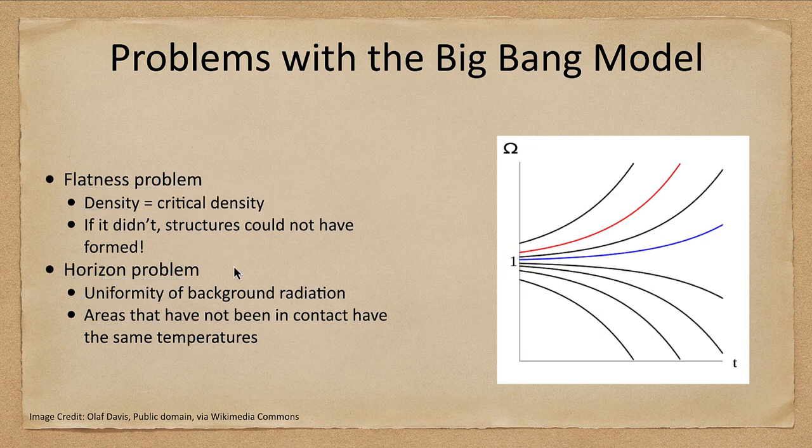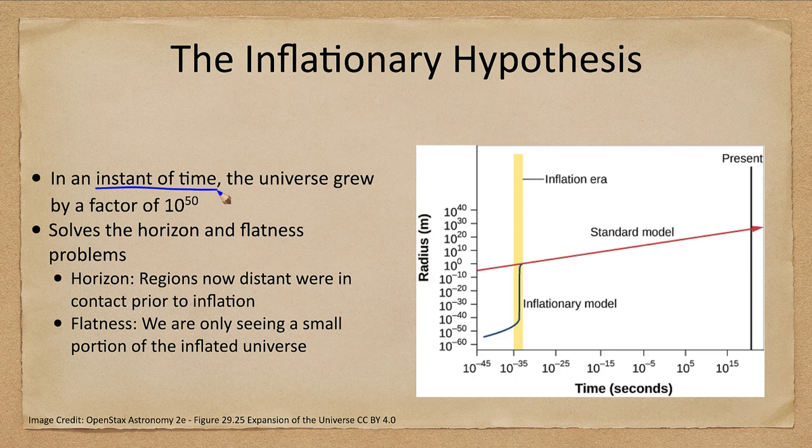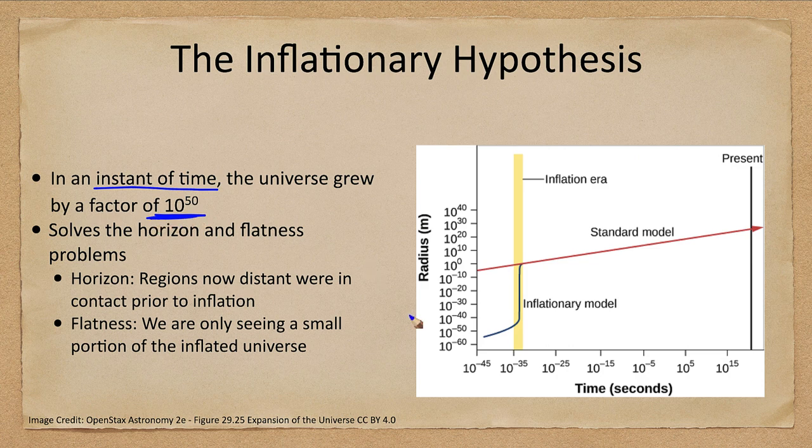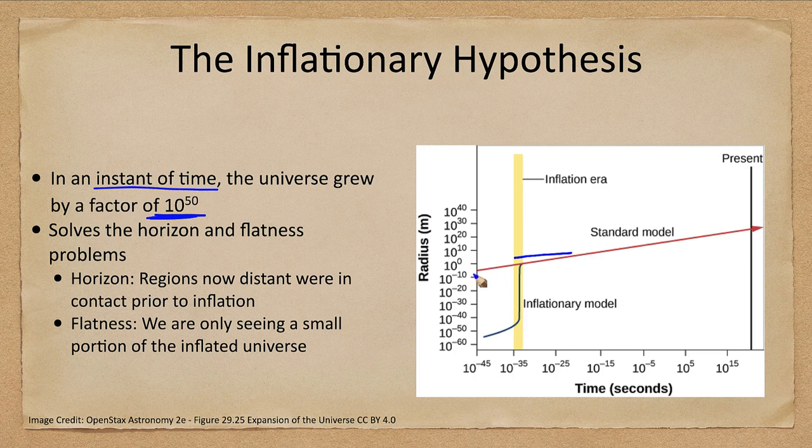So what do we use to solve this? We do what we call the inflationary hypothesis, which says that in a fraction of an instant of time, the universe grew by a factor of 10 to the 50th power. So it went from being atomic size, subatomic size, to all of a sudden being standard size, galaxy size, universe sized here. The standard model, which would trace back at the red line, wouldn't account for things. It wouldn't work because it wouldn't get the things small enough at a quick enough time period.